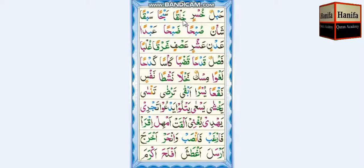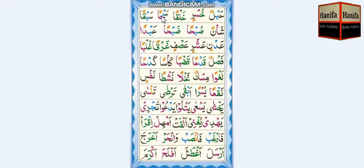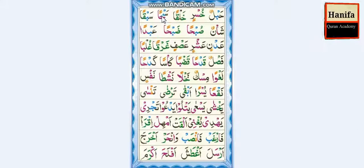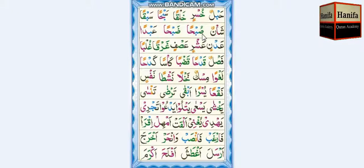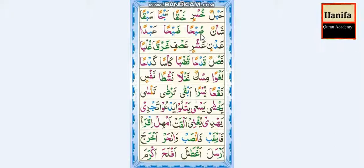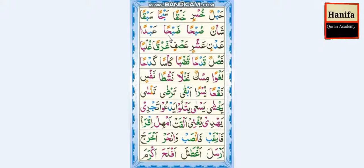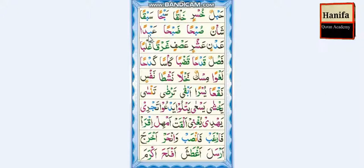Khosrin. Kha, Lam, Fatha — khal. Qaf, Fathatan — qan. Khal-qan. Sin, Ba, Fatha — sab. Ha, Fathatan — han. Sab-han. Sin, Ba, Fatha — sab. Qaf, Fathatan — qan. Sab-qan. Sheen, Hamza, Fatha — sha. Nun, Dammatan — nun. Sha-nun. Saad, Ba, Damma — sub. Ha, Fathatan — han. Sub-han. Dod, Ba, Fatha — dab. Ha, Fathatan — han. Dab-han. Ayn, Ba, Fatha — ab. Dad, Fathatan — dan. Ab-dan.